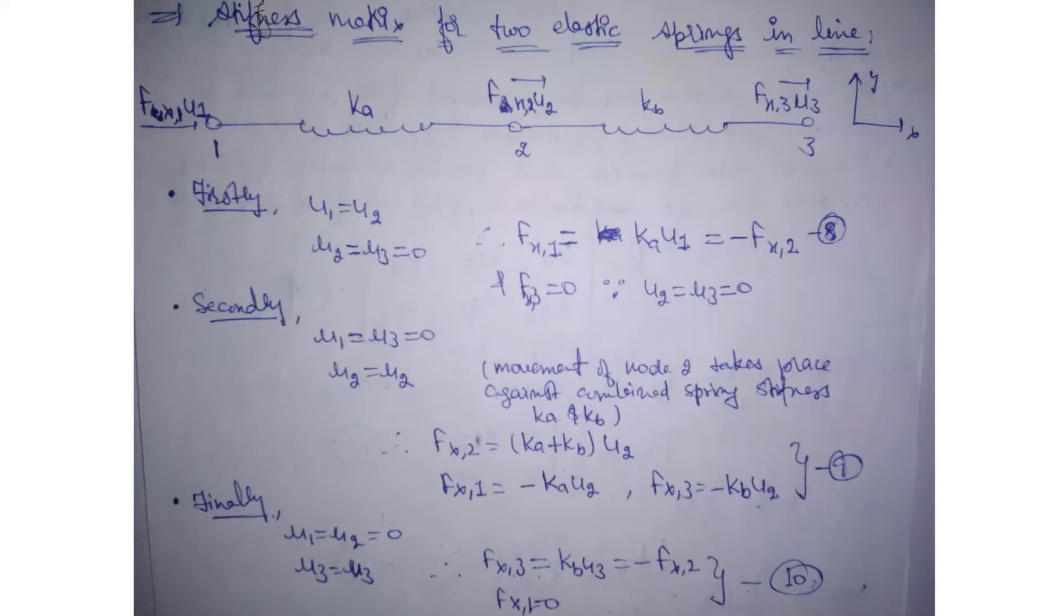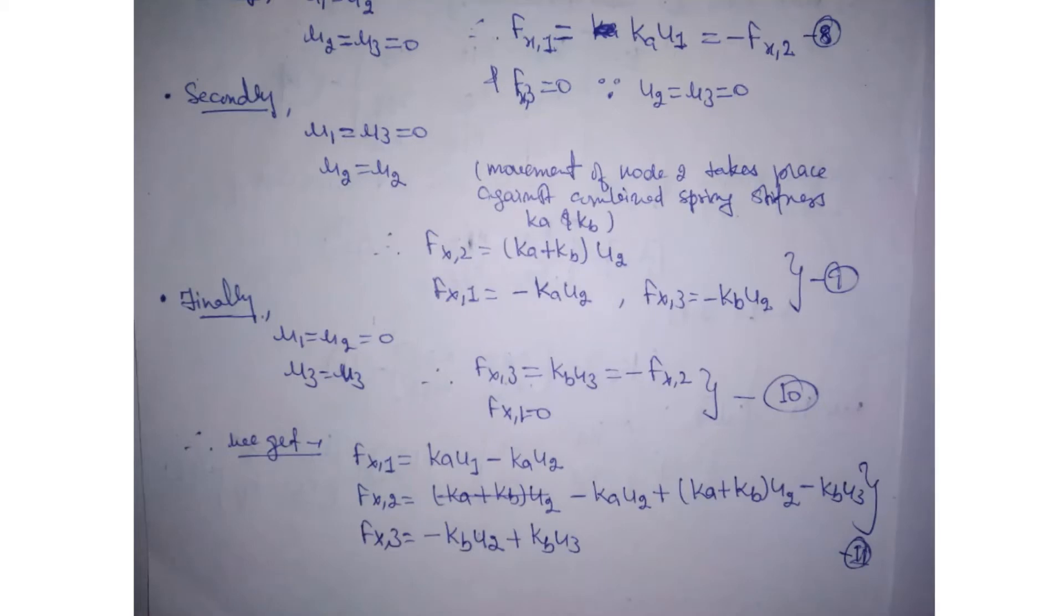Finally, we have U1 equals U2 equals 0 and U3 equals U3. Here we have Fx3 equals Kb·U3, and here the reaction force minus Fx2, here Fx1 equals 0 because Fx3 has no connection with Fx1 force.